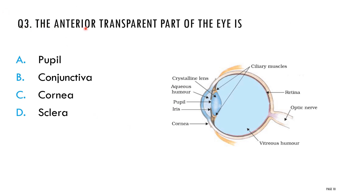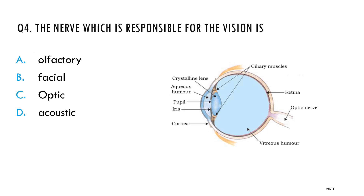Question three: the anterior transparent part of the eye is? Options: pupil, conjunctiva, cornea, sclera. The correct option is cornea — it is the anterior transparent part of the eye. Question four: the nerve which is responsible for vision is? Options: olfactory, facial, optic, acoustic. The correct option is the optic nerve, which is responsible for vision.